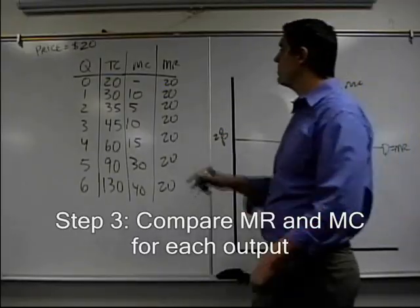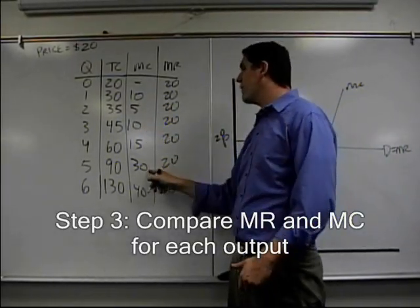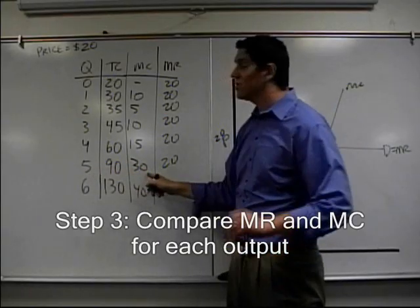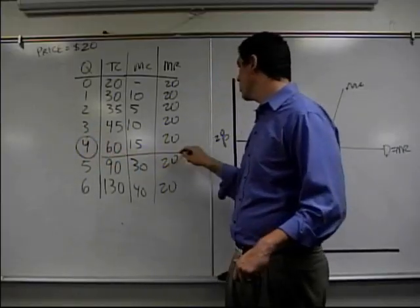Where do I produce? Well, I produce where MR equals MC. I'm going to produce it, produce it, produce it, produce it. I am not going to produce the fifth. And the reason why is because marginal cost is greater than the marginal revenue. I'm going to stop at the fourth. I'm going to produce right here.